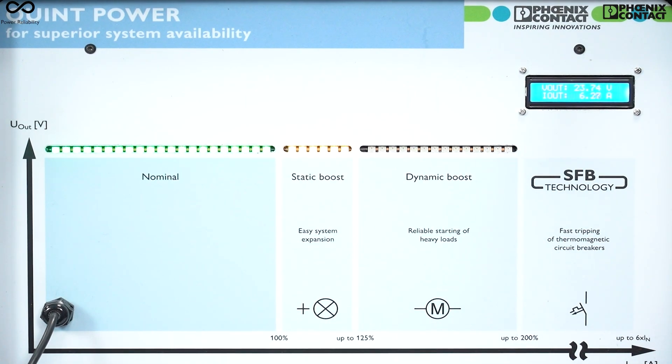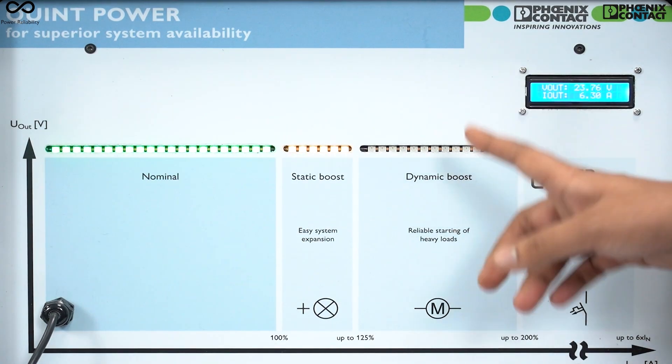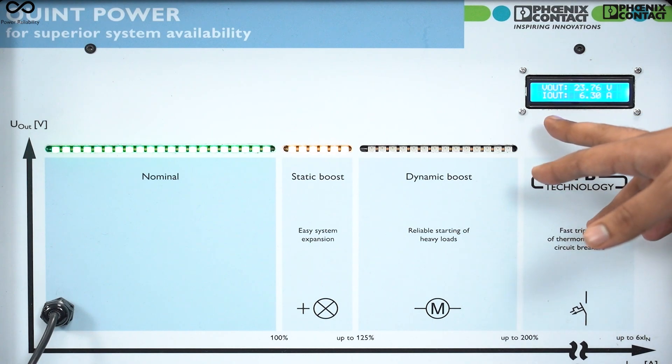Now if I make the power supply work in dynamic boost, you can see the power supply can give two times of the rated current only for five seconds. This is the value shown here. I'll show you again in static boost condition, you can see the output current of the power supply is more than 6.25, that means it is additional 25 percent of the current being withdrawn from the power supply.